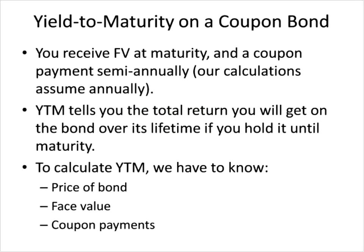What happens when the bond makes regular coupon payments? Yield to maturity tells you the total return on your investment from all those future coupon payments plus the face value at maturity. To calculate YTM, we need to know the price of the bond, its face value, the amount of the fixed coupon payments, and when the bond matures. The face value, coupon payments, and maturity are written on the bond contract and won't change, but the price of the bond is determined by market forces.